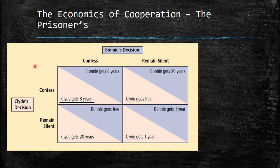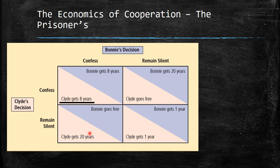But the key of the Nash game is that because of self-interest and incentives to move, they end up elsewhere. Consider Clyde's decision: if Bonnie confesses, Clyde chooses between eight years or 20 years — obviously he prefers to confess. If Bonnie remains silent, Clyde chooses between one year or going free — so he prefers to confess. We underline confess in both cases, moving toward the Nash equilibrium.